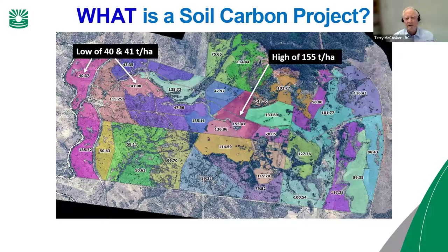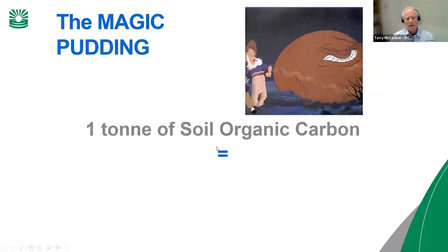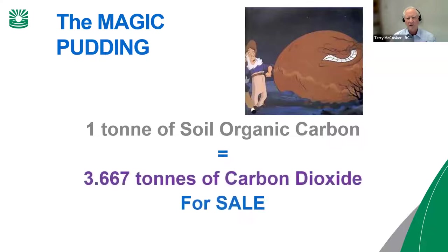From a farming perspective, what you put into the soil is organic carbon, the change measured over time is in organic carbon, but what the market wants is carbon dioxide. For every ton of organic carbon that you put away into a soil, you're sequestering 3.67 tons of carbon dioxide, and it's carbon dioxide that you get paid for.